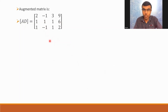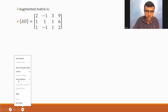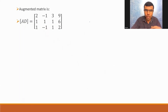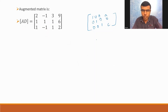In the Gauss-Jordan method, my ultimate aim — understand the aim and everything will become quite simple — is that ultimately I want to get the identity matrix on the left side: 1, 0, 0 in the first row; 0, 1, 0 in the second row; 0, 0, 1 in the third row. And on the right side, there can be some numbers A, B, C. This is my ultimate objective.